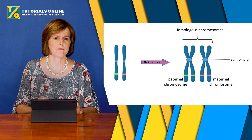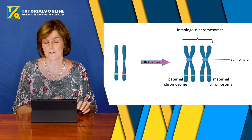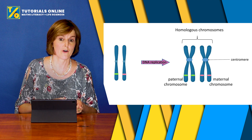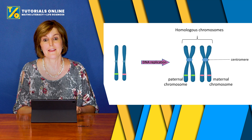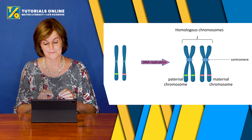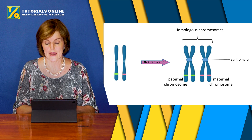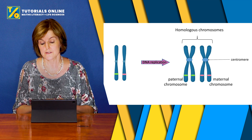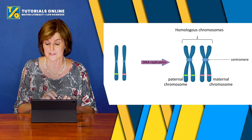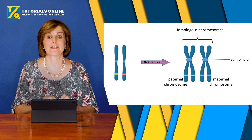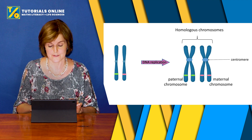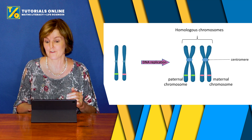Another concept is homologous chromosomes — you need to understand that to understand meiosis. We've got two chromosomes before replication: one from the father and one from the mother. After DNA replication, the paternal chromosome has two sister chromatids and the maternal chromosome also has sister chromatids. But together they code for the same gene, though they might have different alleles. Together they are known as homologous chromosomes — a very important term, especially in meiosis I.